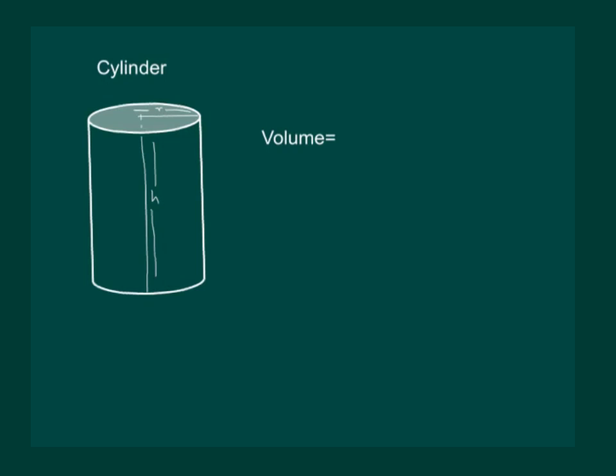Volume of a cylinder whose radius is R and height is H is given by area of the base into height, which is equal to pi R square into H, that is pi R square H.